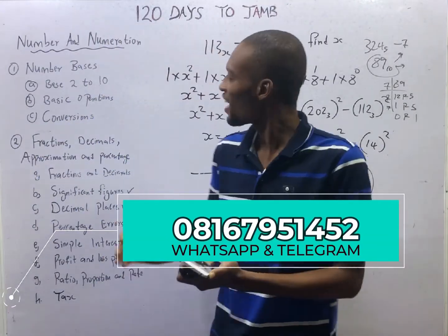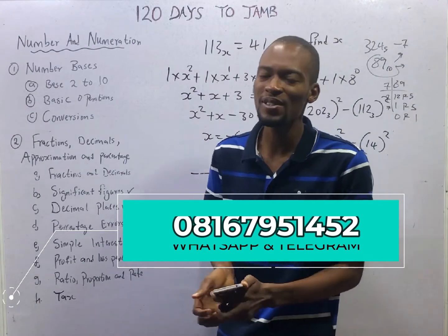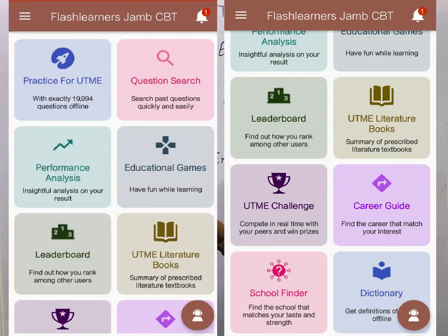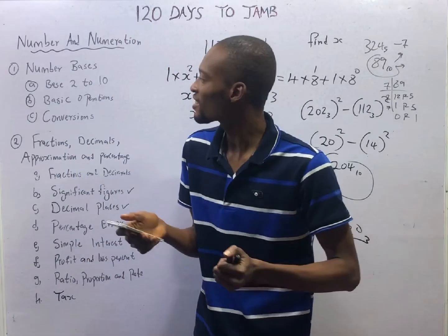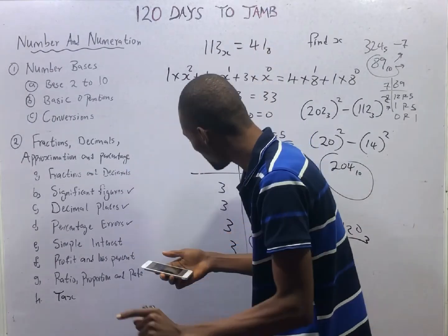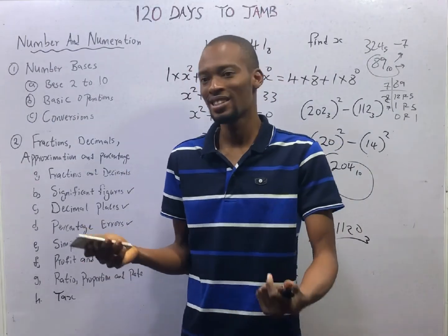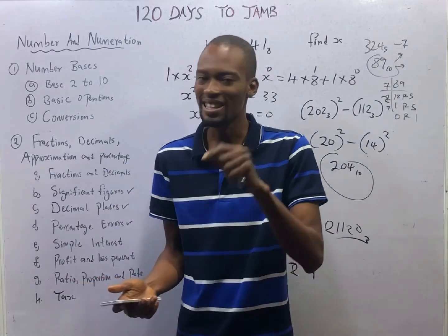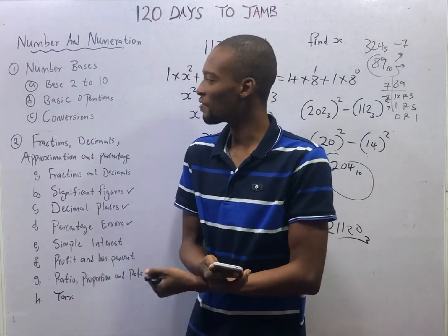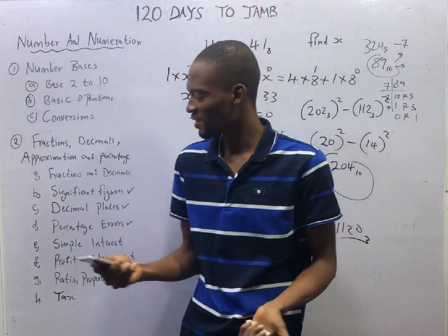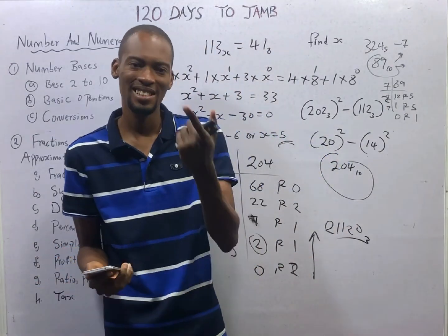Ladies and gentlemen, I hope you are enjoying the class and I hope you enjoyed this revision episode. Assignment is from the FlashNenas Jam application — open your app, click on question search, search 'number bases' and answer the questions that follow, then search 'percentage profit' and answer the questions that follow. If you can't solve any of them, reach me on my social handles. See you in the next episode.